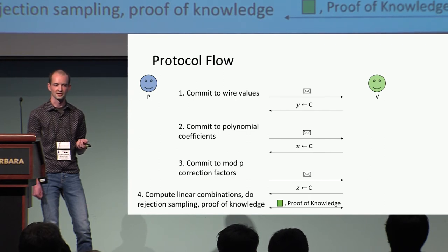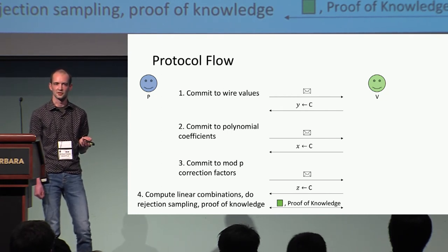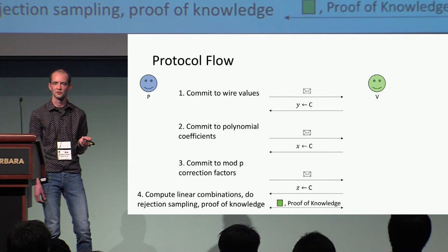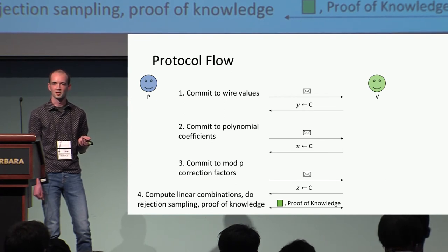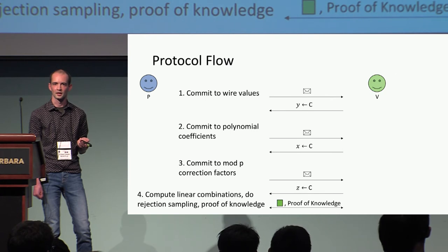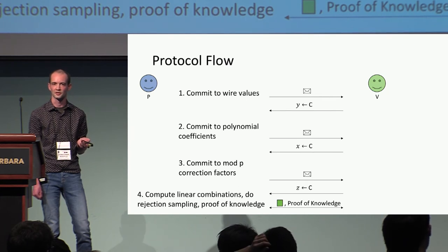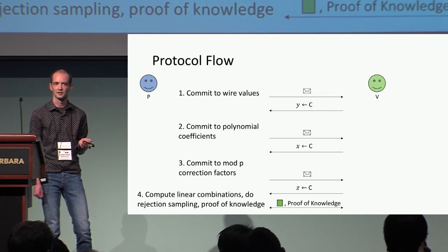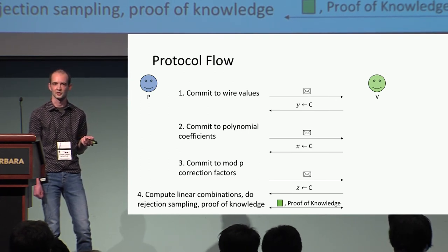What are the mod-p correction factors used for? We're computing a zero-knowledge proof working in a ring Z_Q, which we use for the SIS instance for hashing and committing. We might be doing arithmetic circuit satisfiability modulo p for a much smaller p. When you commit to values using a SIS-based commitment scheme, everything you commit to is really small — you can treat calculations on those values as integer calculations. So if you're trying to prove arithmetic circuit satisfiability mod p, the prover needs to commit to extra mod-p correction factors to turn this integer-like computation into a computation mod p.